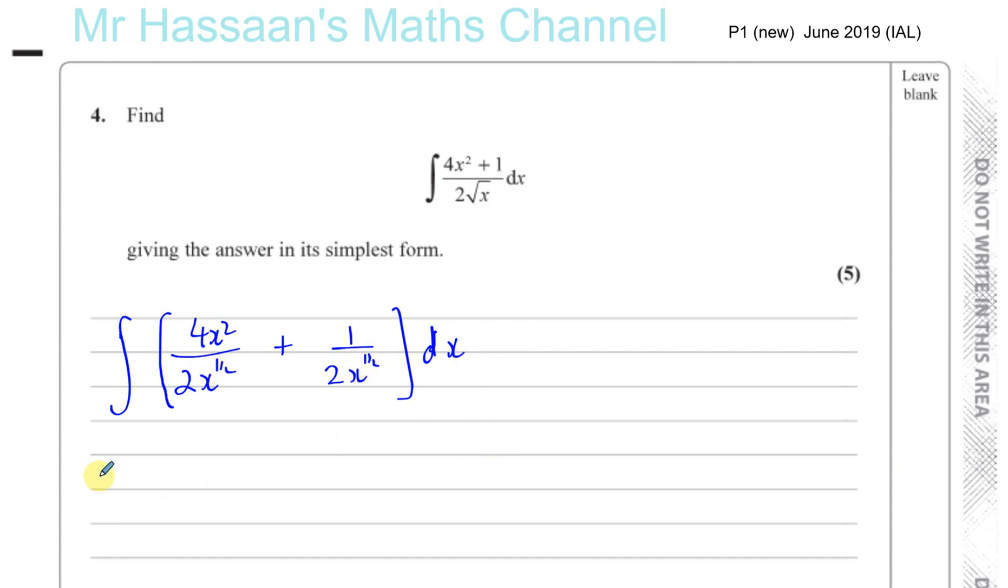Now, we still haven't quite simplified it. We have to get it ready for integration. Well, 4 divided by 2 is 2. Okay, and x to the power of half, so x squared divided by x to the power of half, you have to subtract the powers.